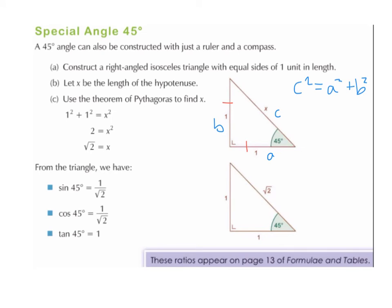Since this is an isosceles triangle with a 90 degree angle, 180 minus 90 leaves 90 degrees shared between the two remaining angles. 90 divided by 2 is 45, so both angles must be 45 degrees. From the triangle, we label the hypotenuse H as root 2, the opposite O as 1, and the adjacent A as 1.